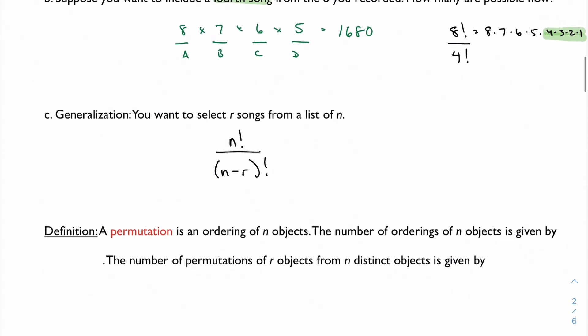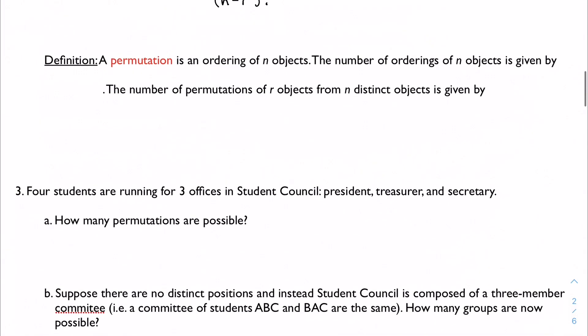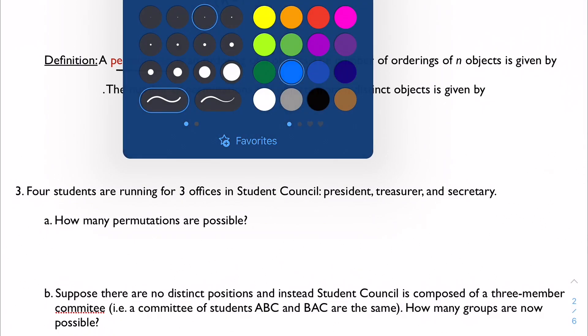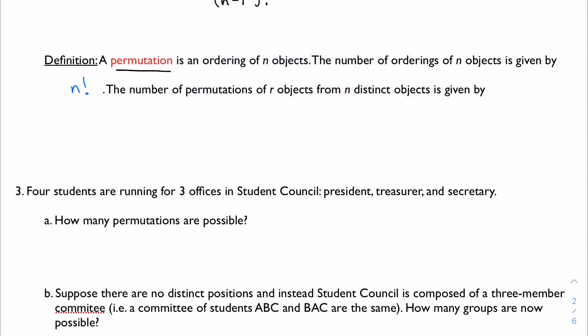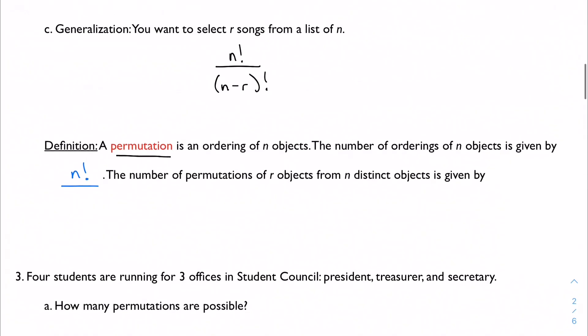And this is going to be a really important formula for us when we talk about counting principles. So a permutation is an ordering of n objects. That's our vocabulary here. The number of orderings of n objects, assuming I'm doing them all, is given just by n factorial. The number of permutations of r objects from n distinct objects is given by the formula that we just came up with.